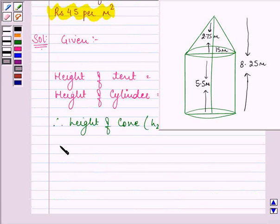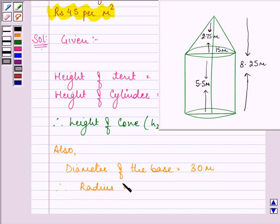Also, the diameter of the base is given as 30 meters. That means the radius of the base will be half of it, which is 15 meters.